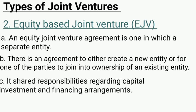To summarize, there are two types of joint venture: Contractual Joint Venture (CJV) and Equity Based Joint Venture (EJV). Thank you.